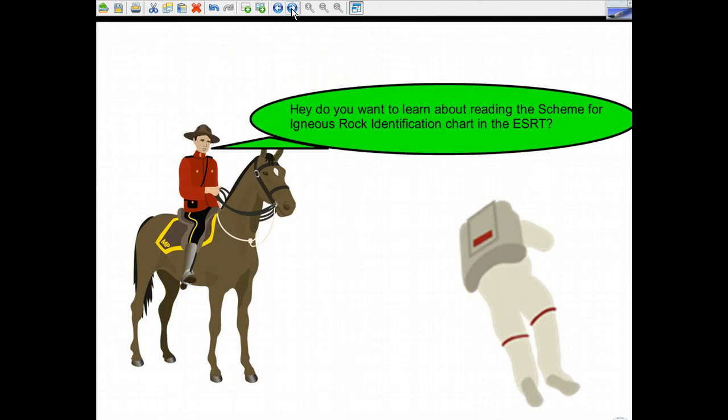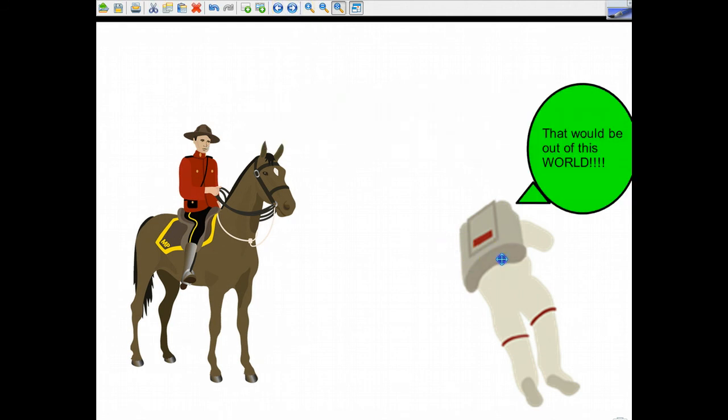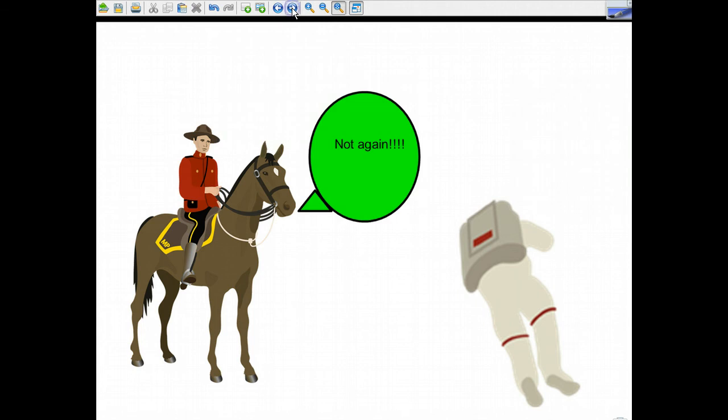Hey, do you want to learn about reading the Scheme for Igneous Rock identification chart in the Earth Science Reference Table? I probably should have animated him a little bit, moved him back and forth, like pretend like he was talking. Too late for that. Next time. And of course, we all know what the horsey says. Again, just to repeat, these are the only two characters that are available in Mimeo.